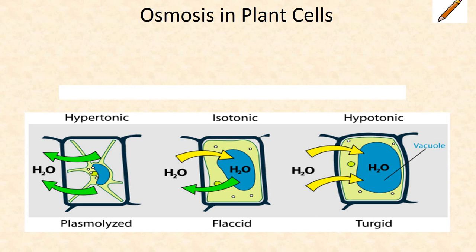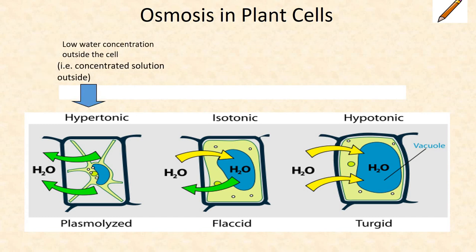Osmosis in plant cells. We can have three different solutions. In a hypertonic solution, there is low water concentration outside the cell. In this case, the cell will shrink or plasmolyze.